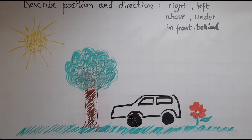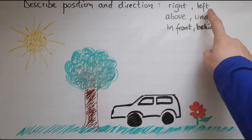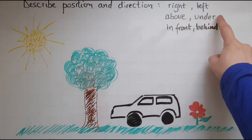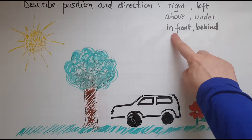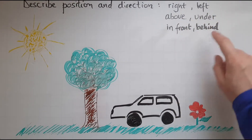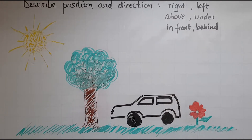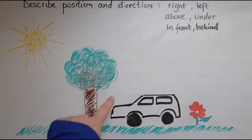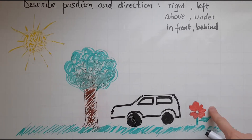In this video we'll learn to describe position and direction using words like right, left, above, under, in front, and behind. Looking at this picture, I can see the Sun, a tree, a car, a flower, and grass.